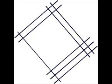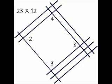To solve the problem 23 times 12, we count the intersections to the right for the ones, and the intersections above and below for the tens, and the intersections to the left for the hundreds, given the solution 276.